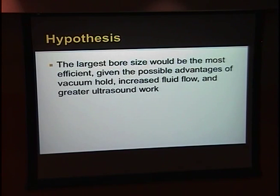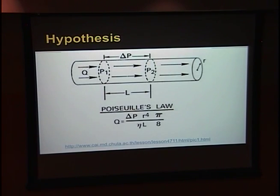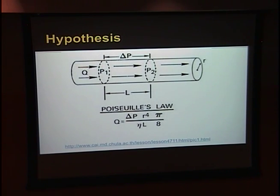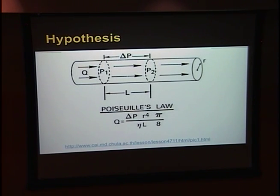We hypothesized that the largest bore size would be the most efficient, given its advantages with increased vacuum hold, increased fluid flow, and greater ultrasound work per tip cycle movement. Our hypothesis is based on Poiseuille's law, which states that flow rate is proportional to the radius of the tube to the fourth power. Therefore, a small change in tip diameter would result in a large change in flow, and a large bore needle would theoretically increase the speed of extraction.